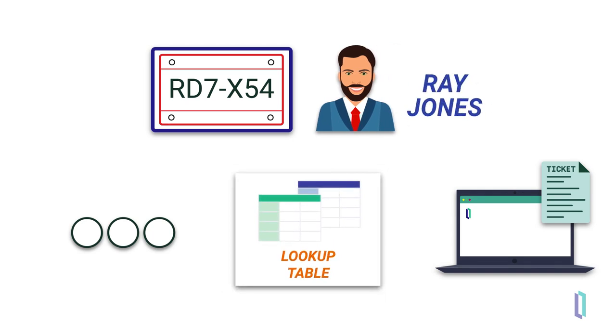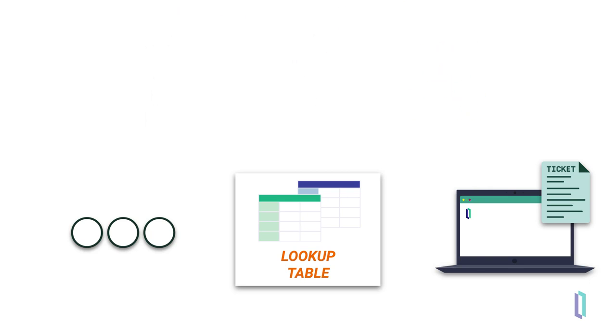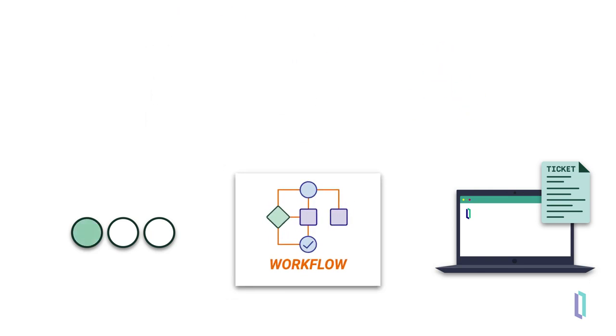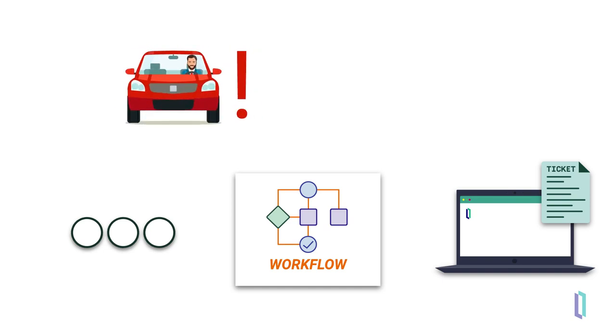If necessary, the business process can also send the message to a built-in human workflow system requiring human interaction before proceeding, like if the red light violation also caused an accident that needed immediate attention.